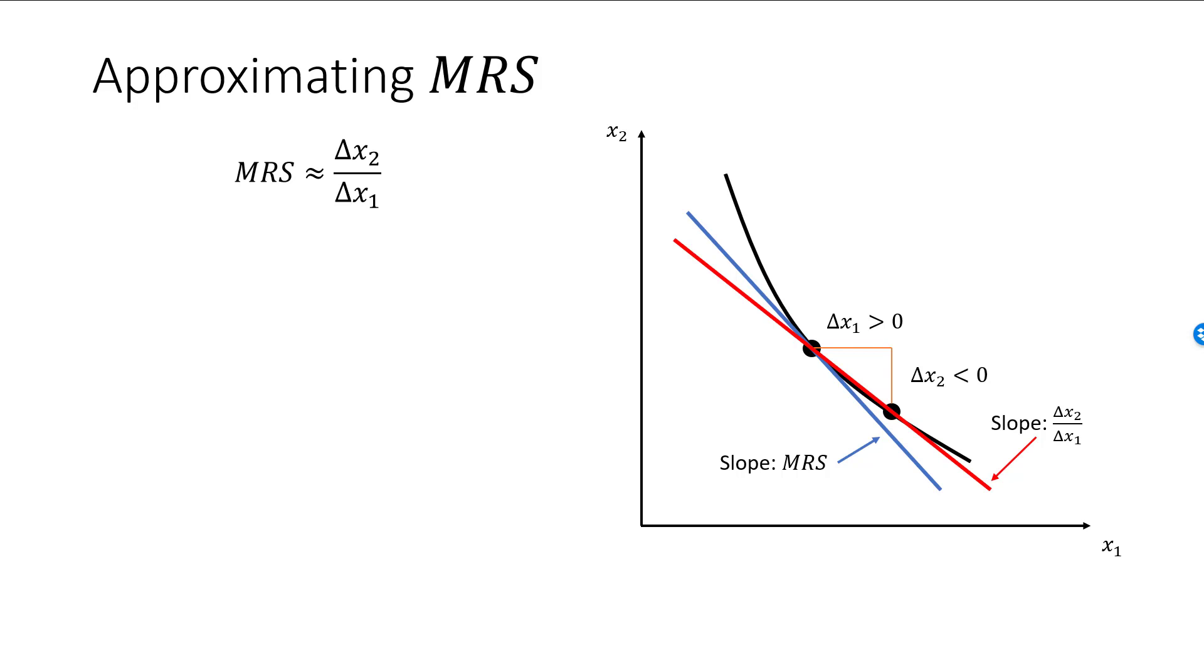The absolute value of MRS will tell us how much I need to give up of good 2 if I want to increase consumption of good 1 while remaining on the indifference curve. I am making a substitution, which makes me equally happy. If MRS is minus 2, then the consumer is willing to give up 2 units of good 2 for each additional unit of good 1. But you can also say that if MRS is minus 2, then the consumer requires 2 units of good 2 to give up 1 unit of good 1. No matter how you cut it, the rate of substitution between the goods is 2 to 1.